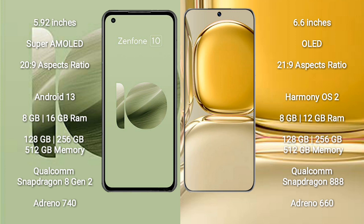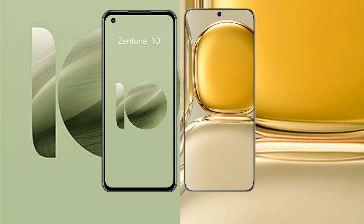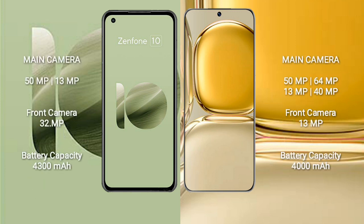The Asus Zenfone 10 features a Qualcomm Snapdragon 8 Gen 2 processor with an Adreno 740 GPU. The Huawei P50 Pro comes with 8GB or 12GB RAM and 128GB, 256GB, or 512GB internal storage, with a Qualcomm Snapdragon 888 processor and Adreno 660 GPU. The Asus Zenfone 10 has a dual rear camera setup of 50MP plus 13MP and a 32MP front camera.